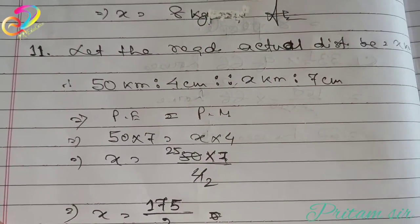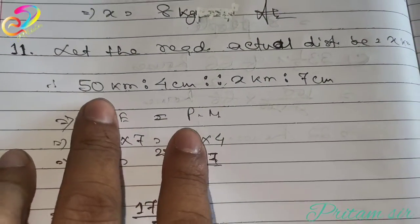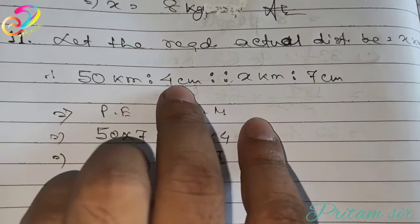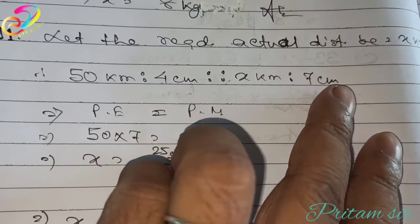Let the required actual distance be x kilometer. Then according to question, 50 kilometer is represented within 4 centimeter, and x kilometer is represented in 7 centimeter.